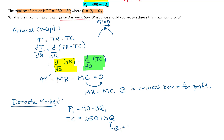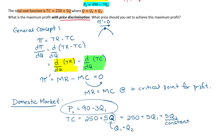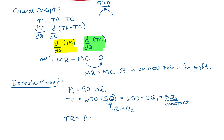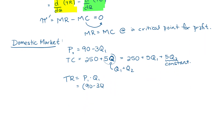Q is really Q1 plus Q2, so TC is really 250 plus 5Q1 plus 5Q2. Since we're not considering the international market right now, we can treat the 5Q2 term like a constant — with price discrimination we treat each market independently, so Q2 is irrelevant here. Total revenue is TR equals P1 times Q1, which is (90 minus 3Q1) times Q1, or 90Q1 minus 3Q1 squared.